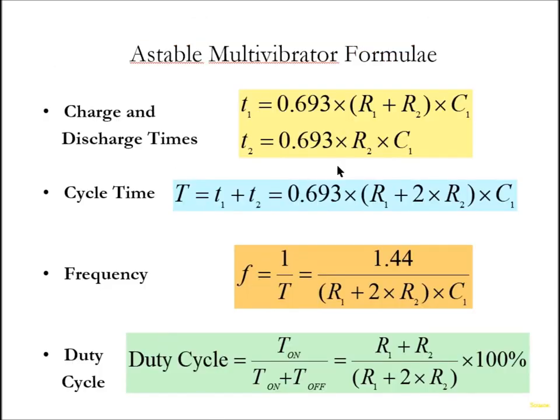There is some math that goes into this. You can calculate the on time and the off time, or the charge and discharge time. When I have those two times, I add those together gives me the total period. Take the period, one divided by the period gives me the frequency. They're the inverse of one another. The frequency also equals 1.44 divided by R1 plus 2 times R2 times C1. Our duty cycle is on time divided by the whole time, or you can calculate it with resistor values: R1 plus R2 divided by R1 plus 2 times R2.